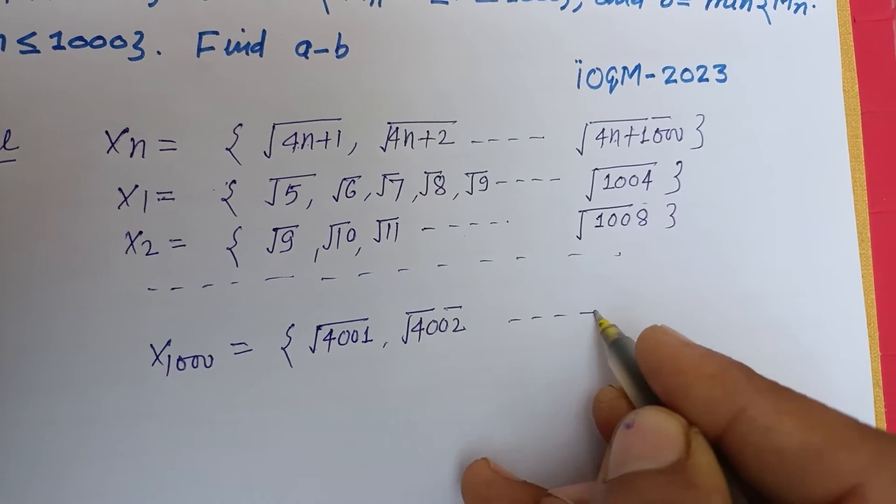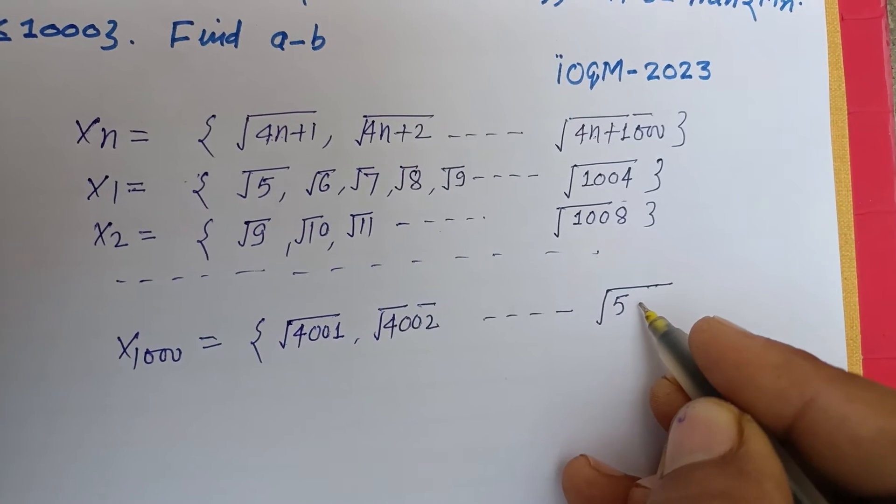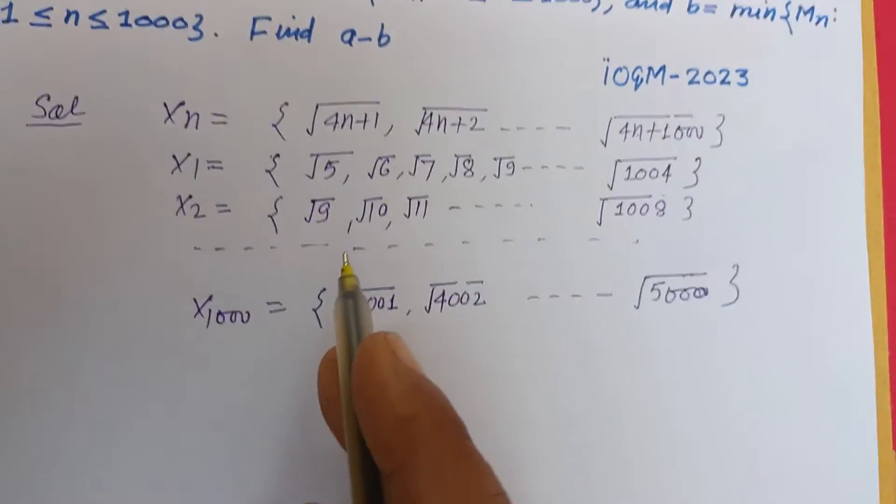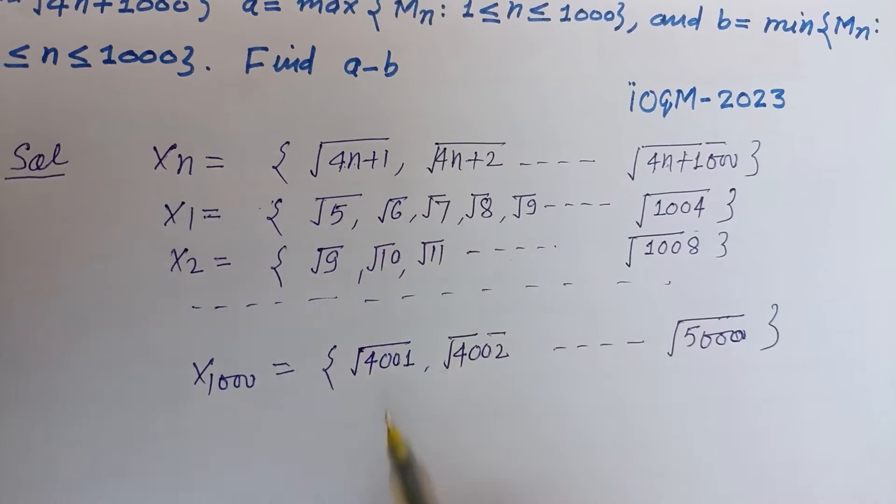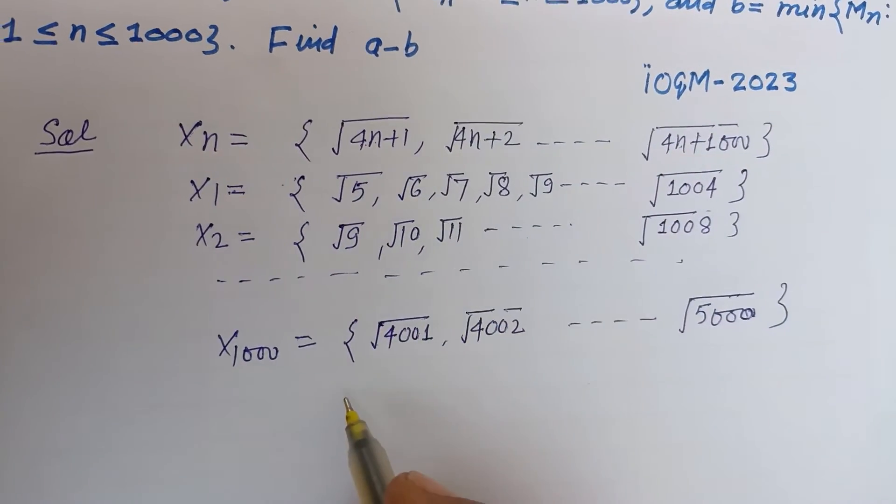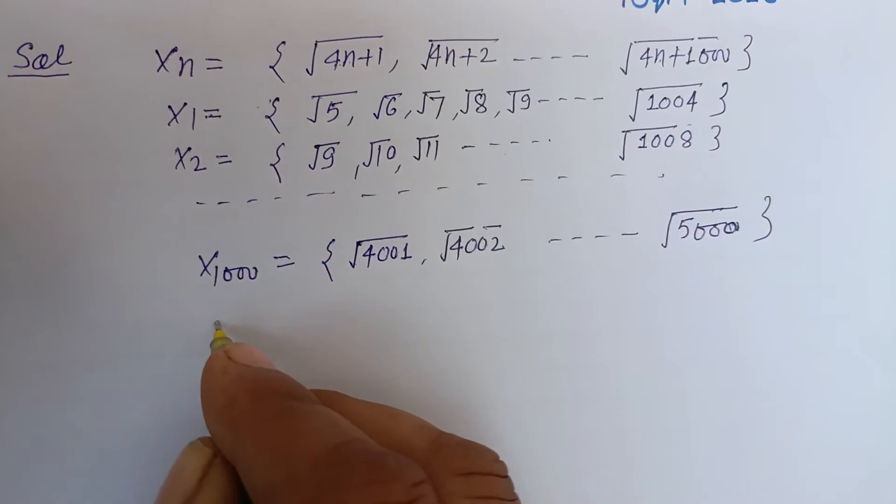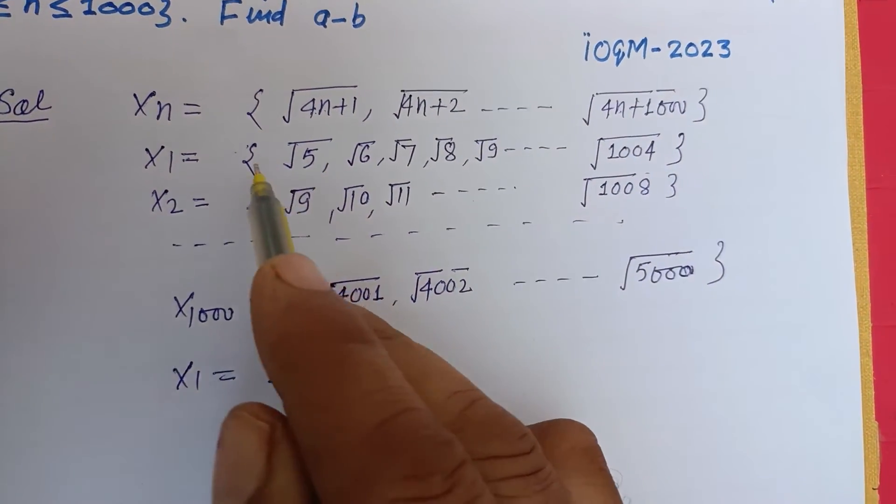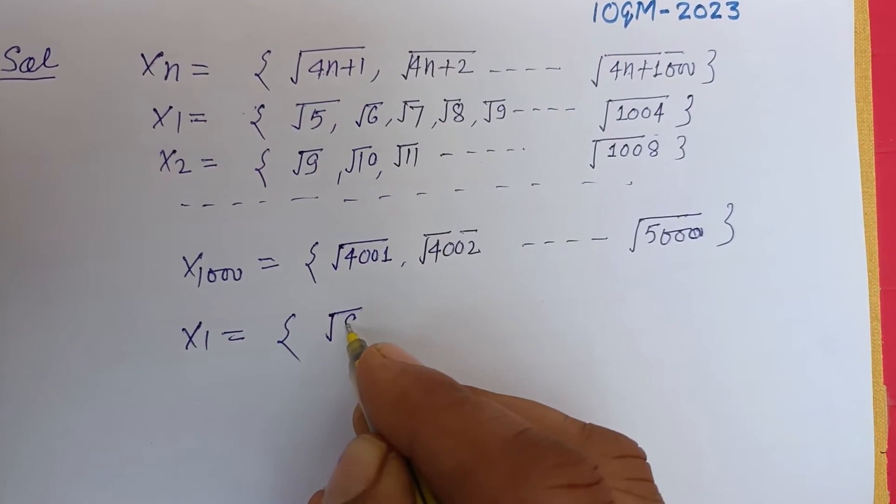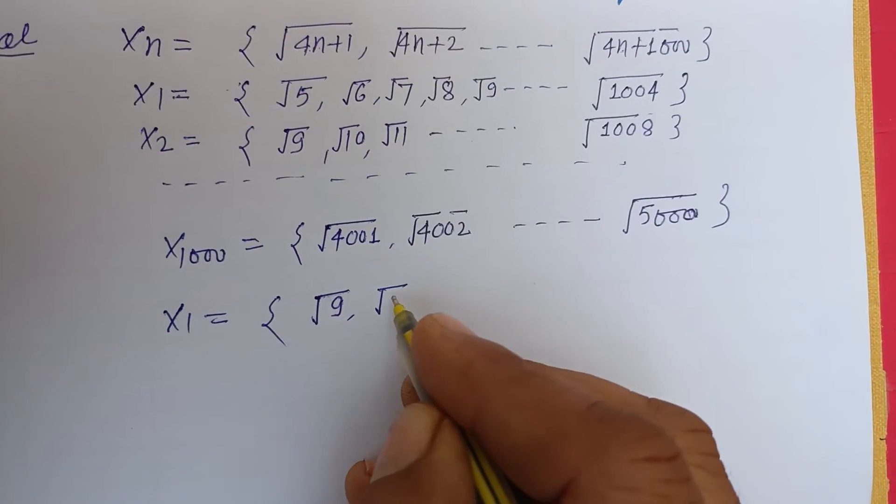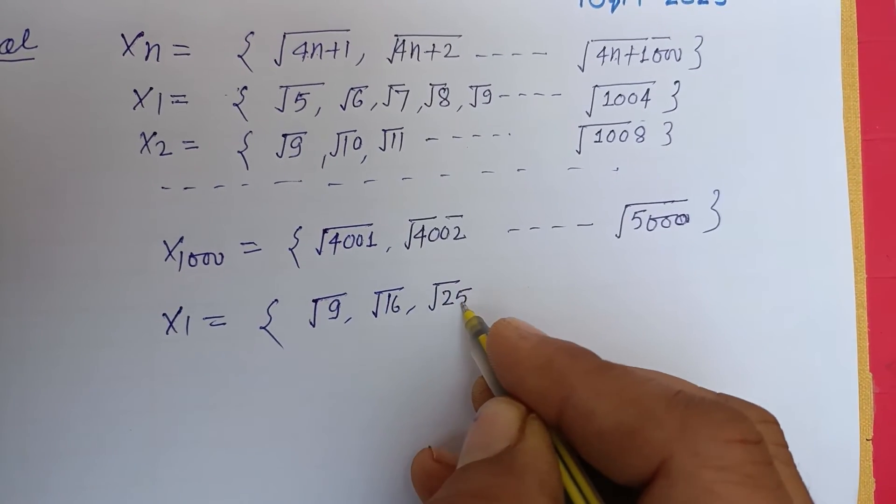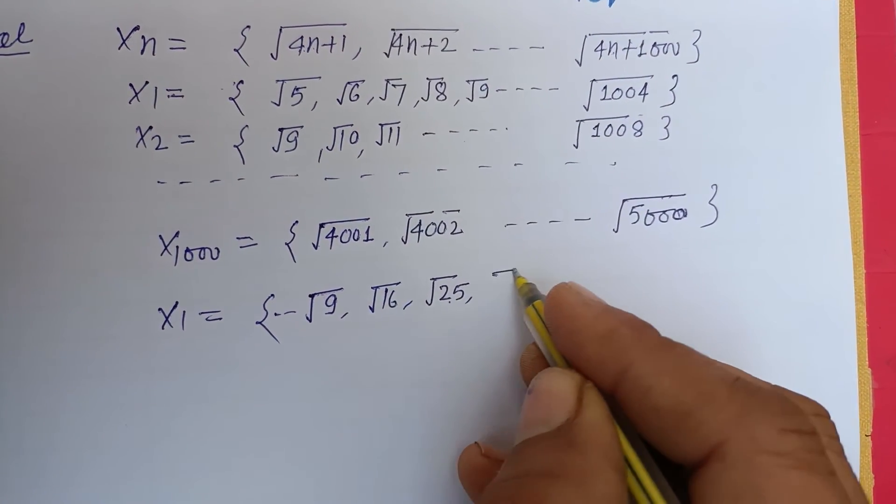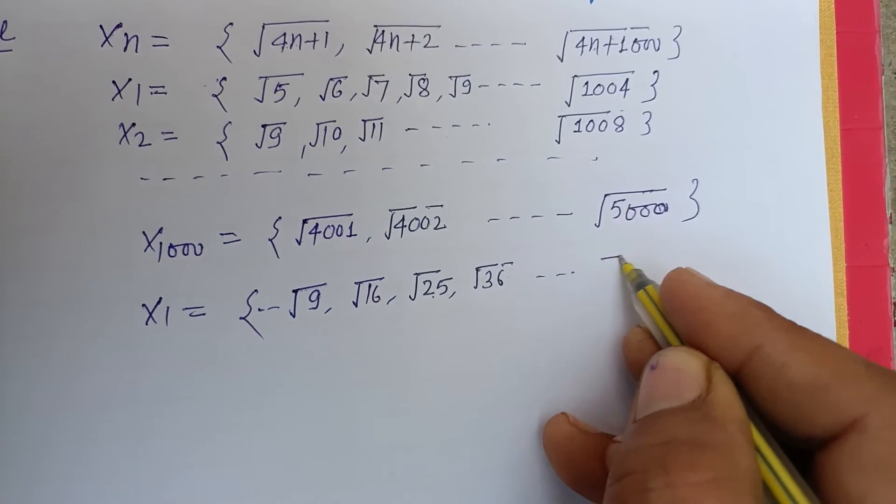Now you know that perfect square numbers are those whose square root we can find. So X1 has the greater number of perfect squares, which is starting from 9, 16, 25—we are taking only the elements of perfect squares—36, and so on, 64, and 31² is the last.